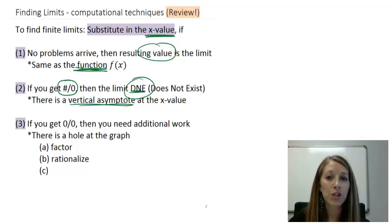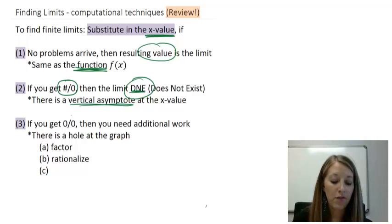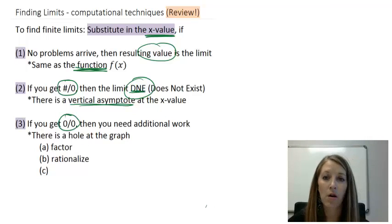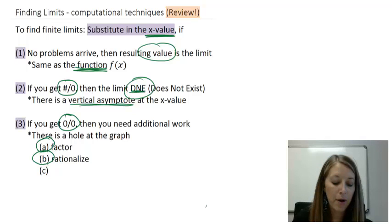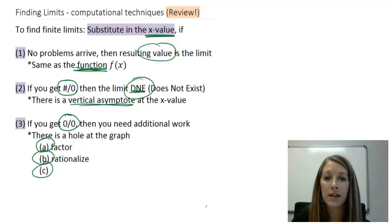The last situation that we saw happen was if we got zero over zero in our rational or fraction function. That meant those things canceled out, but we probably had to do some more work to get there. Maybe we had to factor, maybe we had to rationalize if there was a square root involved so we had to multiply by the conjugate, or I left part C blank, meaning you might have to be creative to get those guys to cancel out.